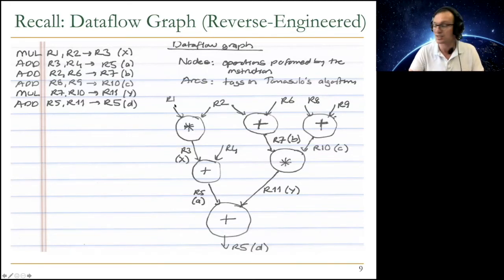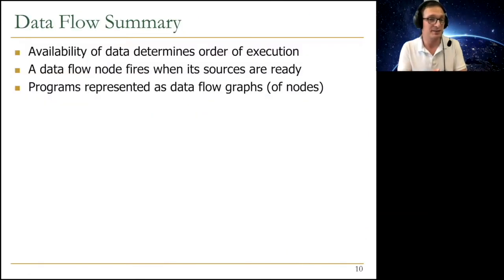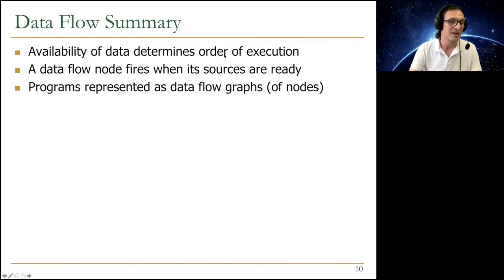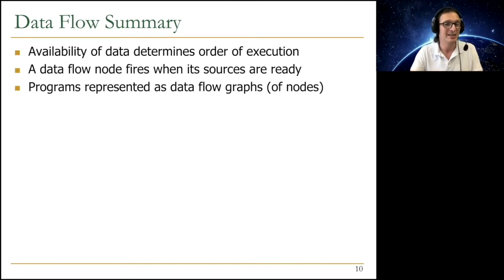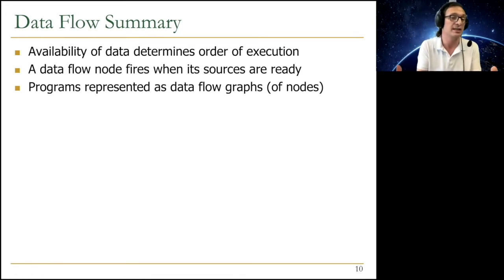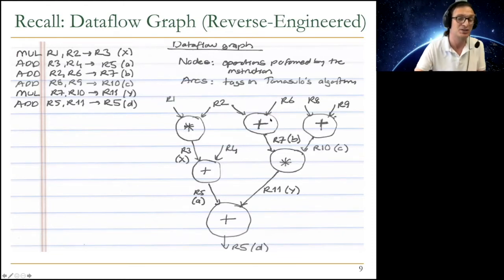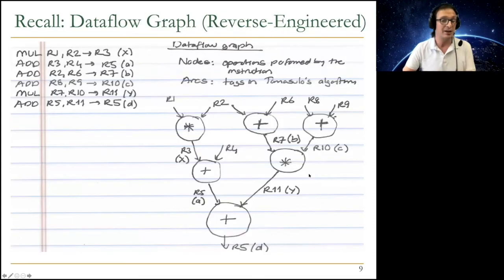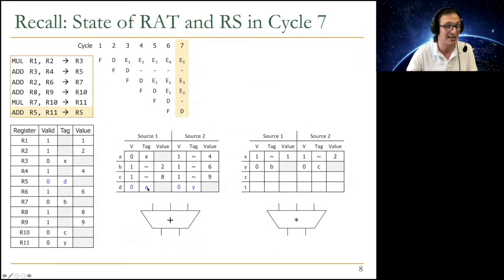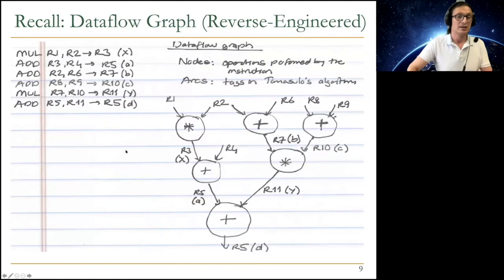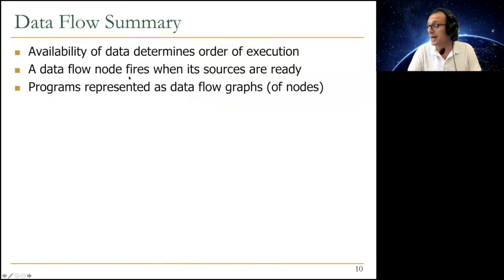To summarize the dataflow paradigm: availability of data determines order of execution. There is no centralized control sequencing and no program counter. At the core of an out-of-order engine, the availability of source operands determines whether an instruction can execute. Each instruction is a dataflow node, and you can figure out what type of instruction it is based on which reservation station it sits at. You can reverse-engineer the sources by looking at the tags and how different tags are linked to different values. A reservation station is basically a dataflow node — an instruction fires when all of its sources are ready. Programs are represented as dataflow graphs of nodes — this is dataflow at the ISA level.